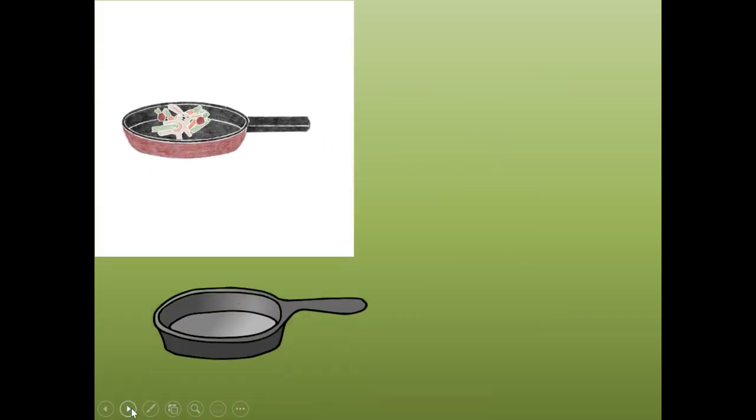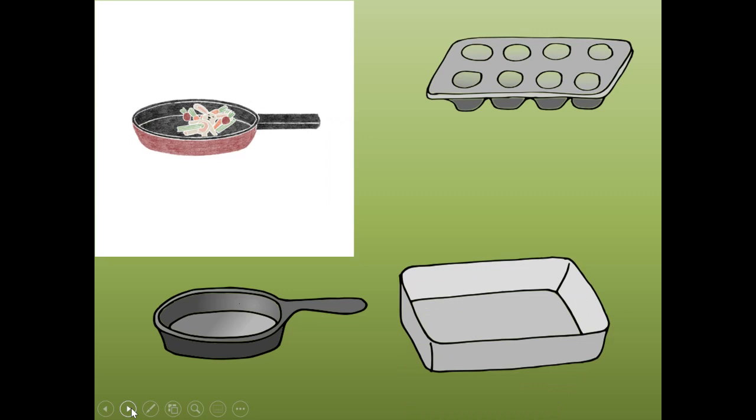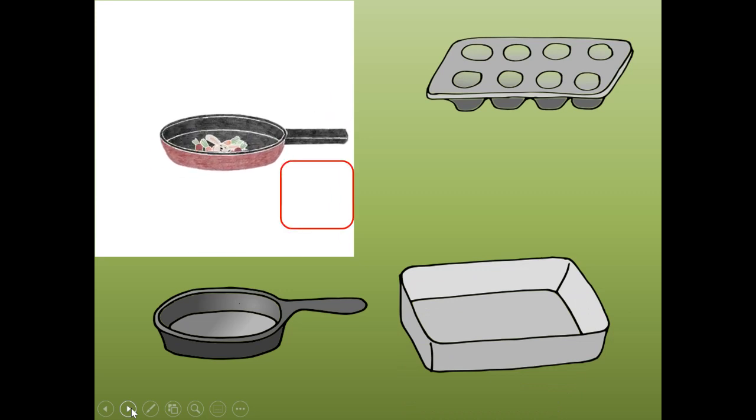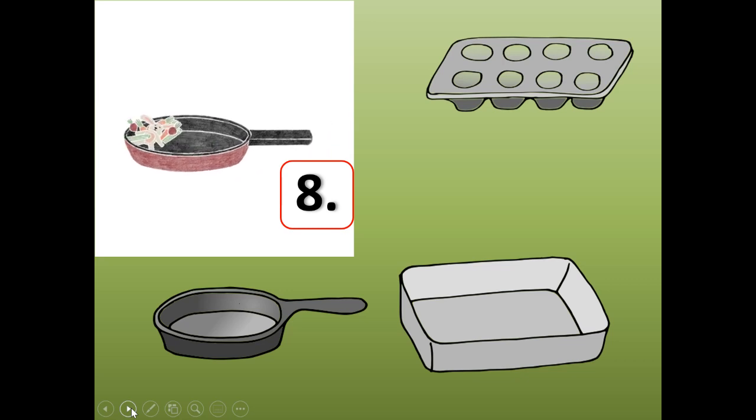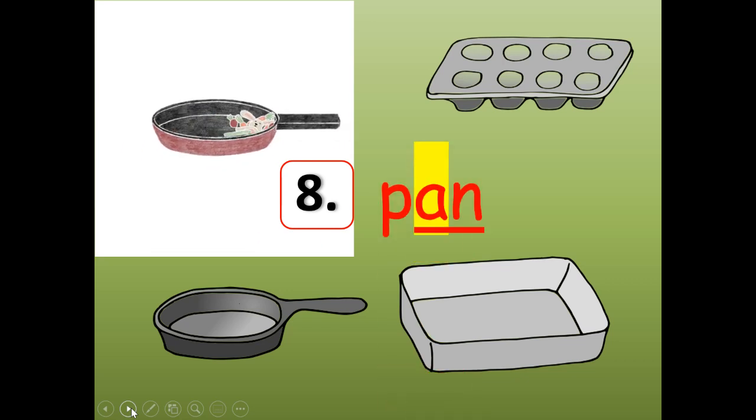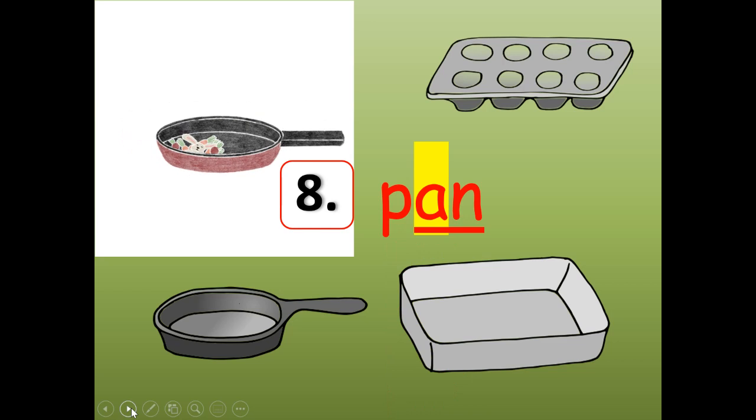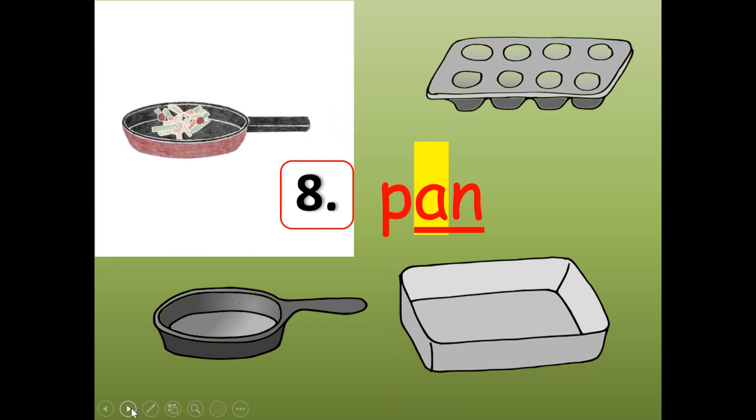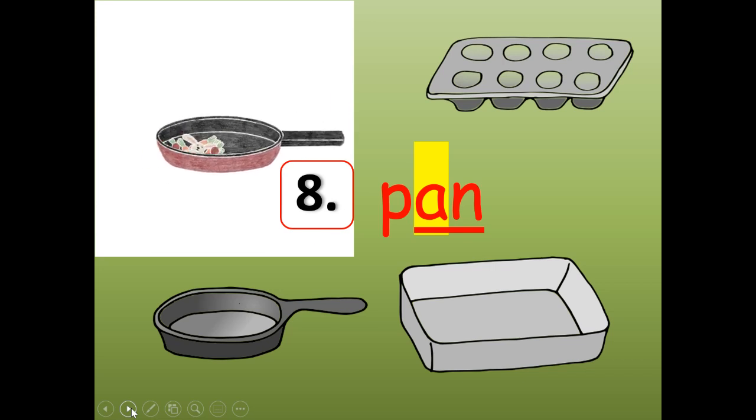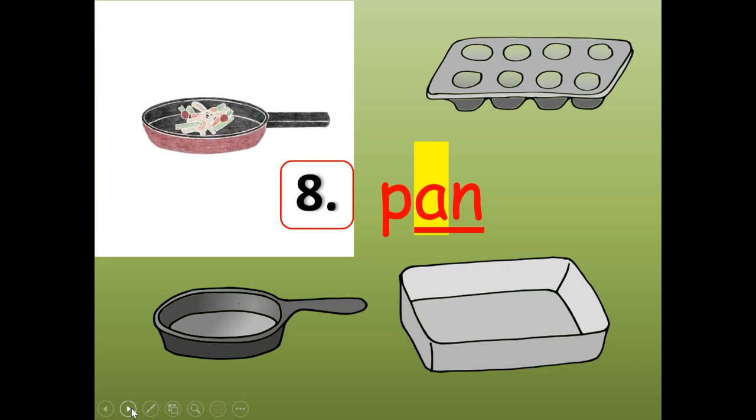Number eight. These are all examples of what. It rhymes with Dan and fan and man. Number eight. You know what it is? Pan. Stretch it. Pan. Shrink it. Pan. P-A-N. And if you need to pause it, and I'm going too fast, do so and then push play when you're done writing P-A-N. Pan. Number eight.